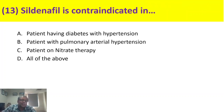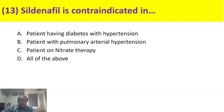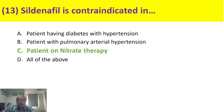Sildenafil is contraindicated in which situation? Sildenafil causes local vasodilation and is used for erectile dysfunction. However, if a person already has cardiovascular disease or is taking a coronary dilator drug, especially nitrates, sildenafil must not be given. It can be given in patients with diabetes. It is also one of the drugs used for pulmonary arterial hypertension. But in a patient on nitrate therapy, you must not give it. The correct answer is option C.